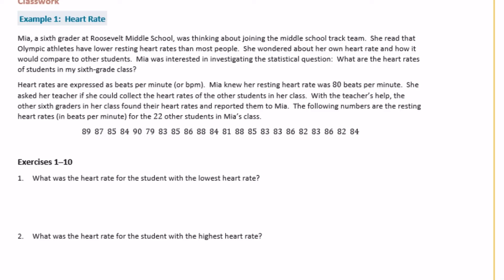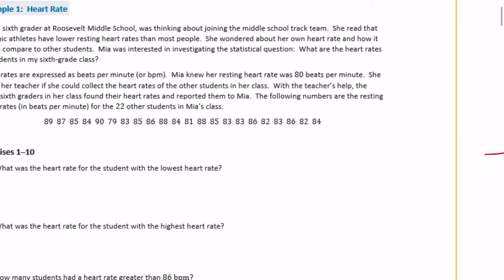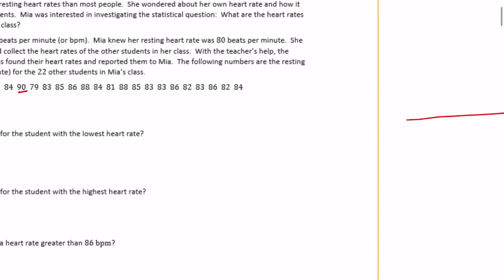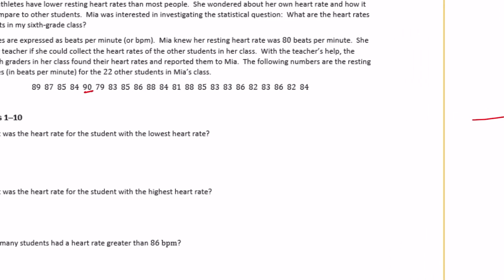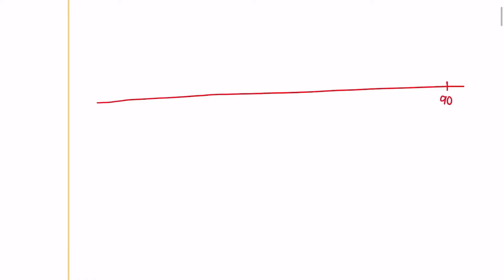So what we're going to do is create a dot plot of our heart rates. I'm going to draw a line. And then let's look at the data points that we have. So we have anything ranging from, I see a 90. Is there anything higher than 90? So the highest heart rate was 90. So I'm going to put 90 on this end. And then the lowest heart rate, let's see, there's a 79. Is there anything, nope, nothing else in the 70s. So we're going to go from 79 to 90.